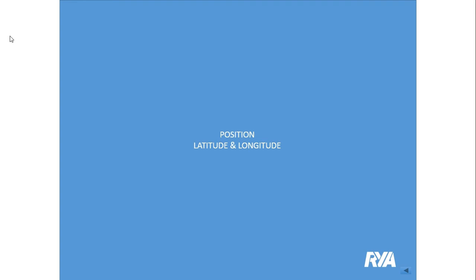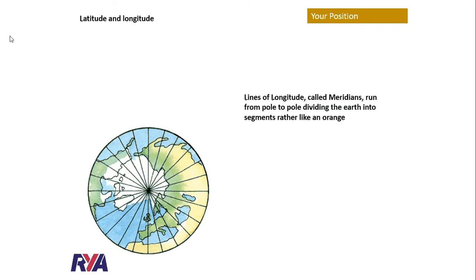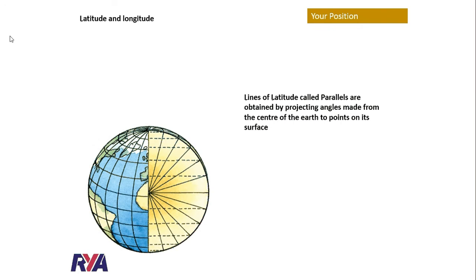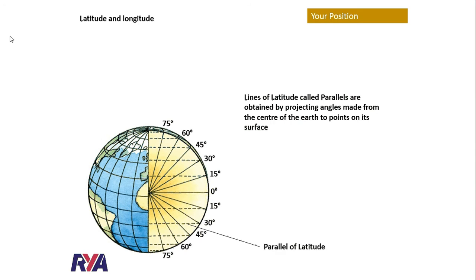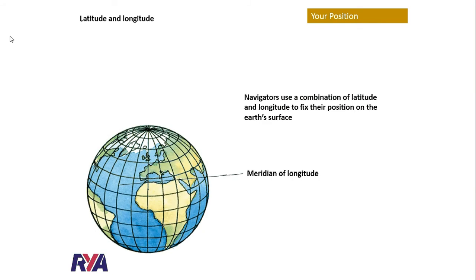Position fixing by latitude and longitude. Lines of longitude, called meridians, run from the north pole down to the south pole and divide the planet up into segments, almost like orange segments. The prime meridian passes through Greenwich in London, and longitudes are expressed as either being to the east or west of Greenwich. Latitudes, or parallels of latitude, are set by being north or south of the equator and are expressed as being north or south.